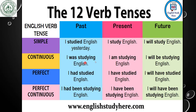For continuous tenses: 'I was studying' is past continuous, 'I am studying' is present continuous, 'I will be studying' is future continuous. For perfect tenses: 'I had studied' is past perfect, 'I have studied' is present perfect — both use the third form of the verb. 'I will have studied' is future perfect. For perfect continuous: 'I had been studying English' is past perfect continuous, 'I have been studying English' is present perfect continuous, 'I will have been studying English' is future perfect continuous.